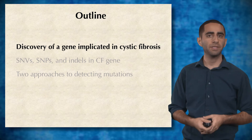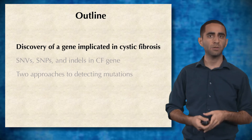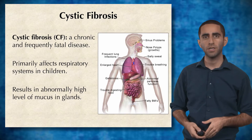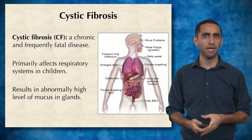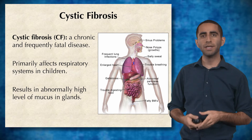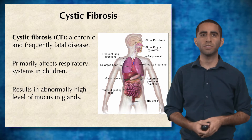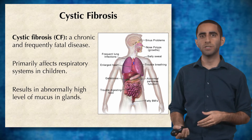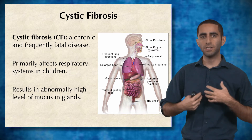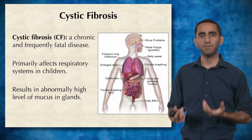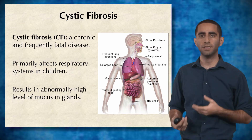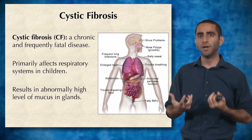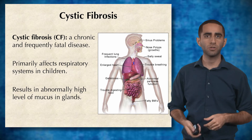First, let's talk about the discovery of a gene that was implicated in cystic fibrosis. Cystic fibrosis, or CF, is a chronic and frequently fatal disease. It primarily affects respiratory systems in children, and it results in abnormally high levels of mucus in their glands, making it very difficult for these children to breathe.